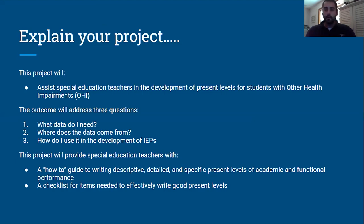I think those are three great questions, especially for any time you're determining eligibility for a student with a possible disability. You need good data — you need to be able to fill in the blanks in regards to who the student is, what their strengths are, what their weaknesses are, and how they compare to same-age peers. You need to know where the data comes from, where to look for it, and then how to use it — that's the practical application part of it.